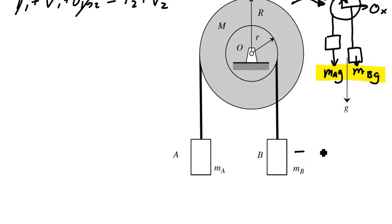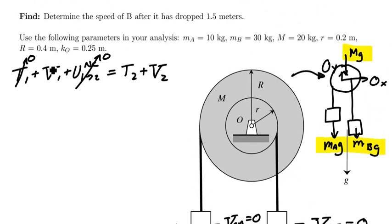So I'm going to set individual datums for block B and block A. I'm going to choose the initial position of block B as being the datum, and the initial position of block A as being the datum as well. So that's going to give me, in this case, zero potential energy in state one as well.